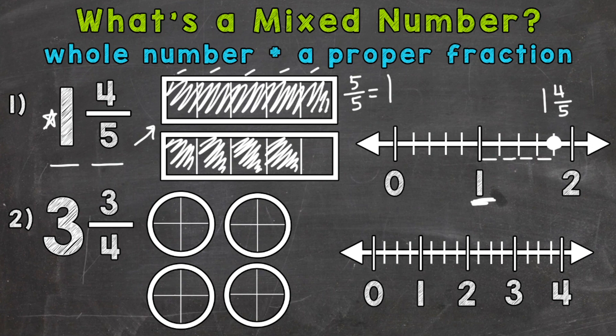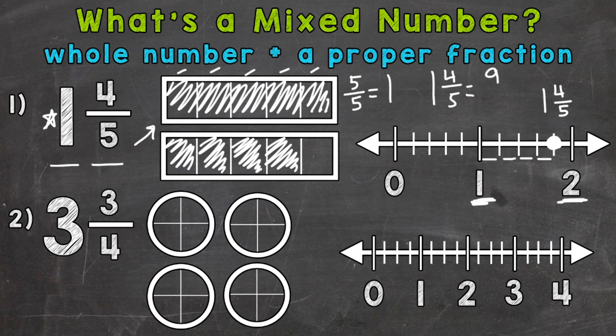Mixed numbers can also be expressed as improper fractions. An improper fraction is a fraction where the top number, the numerator, is greater than the bottom number, the denominator. Mixed numbers and improper fractions are equivalent — they can represent the same value, just two different ways to write it out. For example, one and four fifths is actually equivalent to nine fifths.